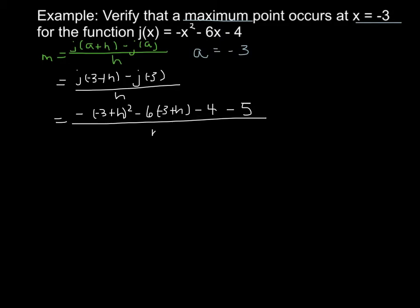All over h. Now we'll have to do some expanding. So I'll get negative h squared plus 6h minus 9 minus 6h plus 9, and then minus 4 minus 5, that's minus 9 over h.